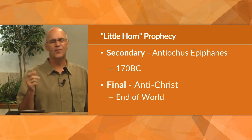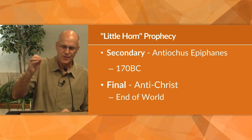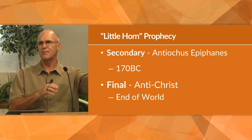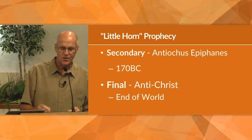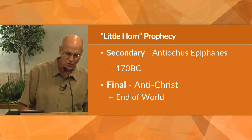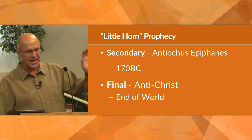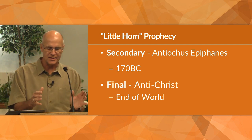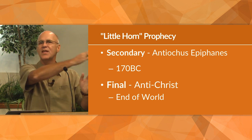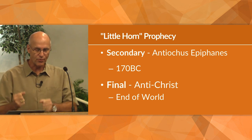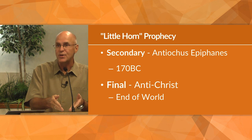Now let's get to chapter 9, the 70 weeks. In chapter 9, Daniel prophesizes concerning the nation of Israel and the specific coming of the Messiah — a change of gears. In verses 1 to 19, Daniel is praying and studying the Word when he realizes that Jeremiah's prophecy said the people would be in captivity for 70 years, and that 70 years is almost up in his own lifetime. He prays that God will honor His word and return the people home to rebuild Jerusalem and the temple.